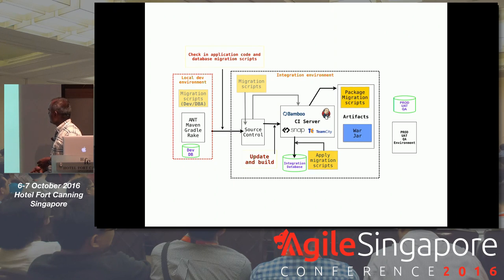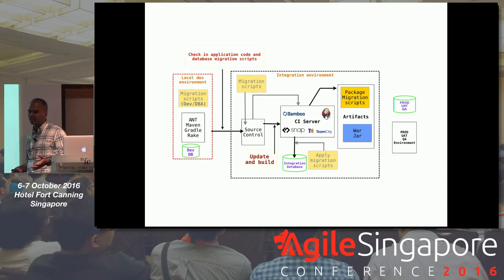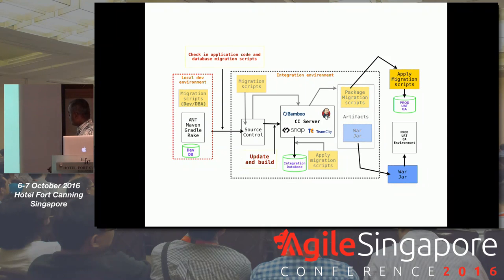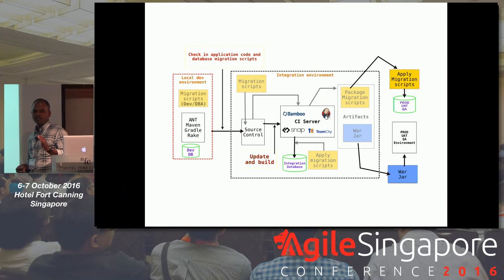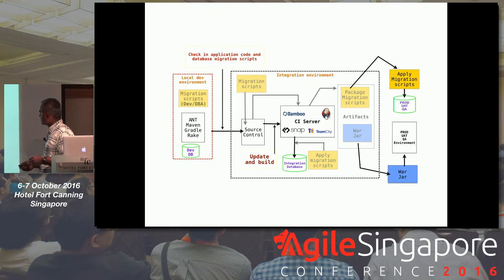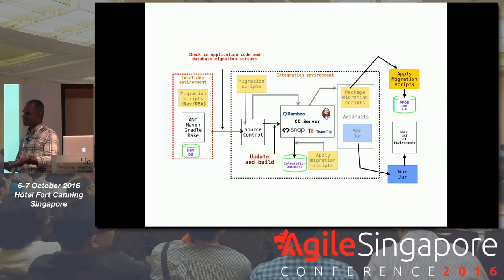When you check in that migration script, it triggers a CI build. The CI build uses the same migration script to apply changes. Once the build is successful, you package all the migration scripts — a jar, war, DLL in .NET, or a tag in Ruby — along with your app artifacts. When you deploy, you're deploying that artifact to the environment and applying the same scripts. This ensures the app and database structure are always in sync. You'll never again have 'column not found' or 'table not found' errors.